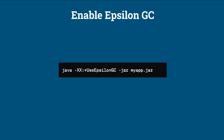To enable the Epsilon garbage collector, you use the XX plus use Epsilon GC JVM option when starting your Java application.